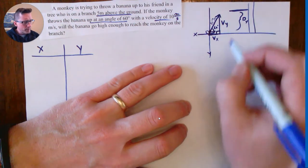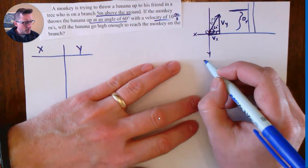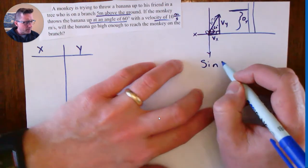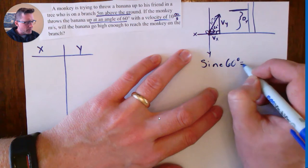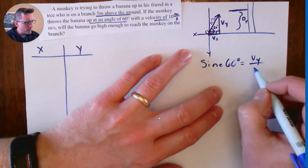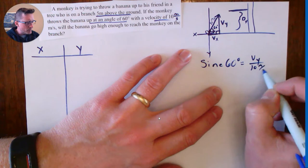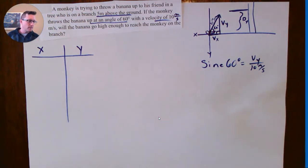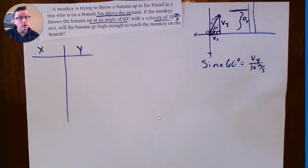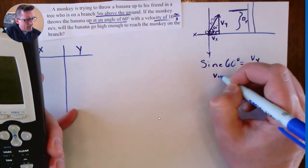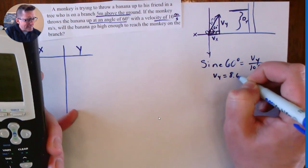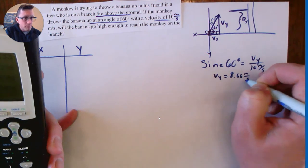So remember, v_y is the opposite. So we're going to use sine to find the opposite side. So sine of 60 degrees equals v_y over 10 meters per second. So calculate that on my calculator. 10 times the sine of 60. Make sure your calculator is in degrees mode. V_y then equals 8.66 meters per second.